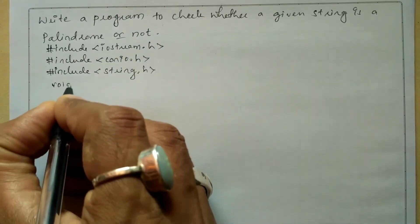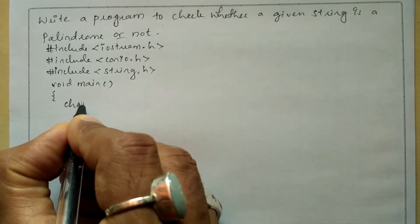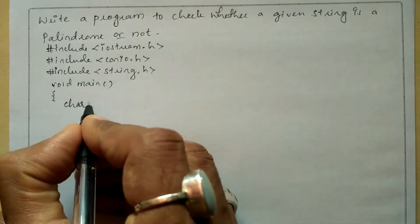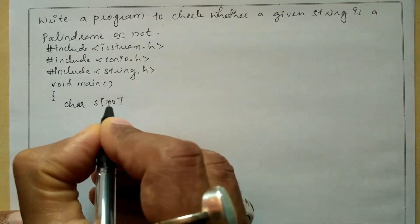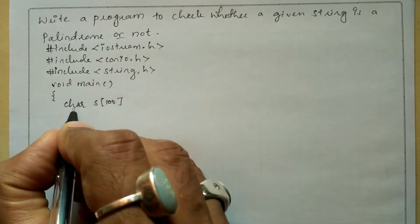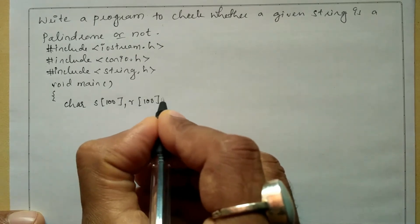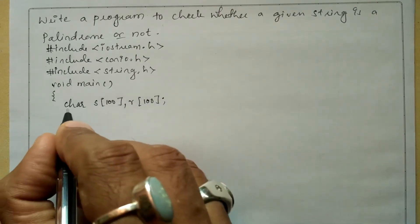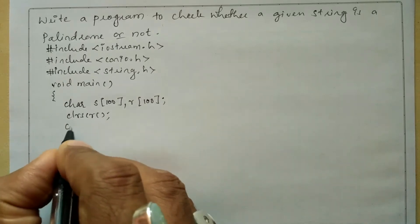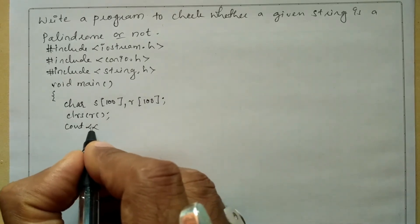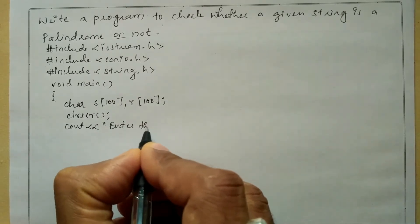Now let us write the main function with a curly open brace. In the declaration section, I'm going to declare two variables of type character array. Here I'll write 's' that represents the string with size 100, and 'r' that represents the reversed string with size 100. Next I'll write the clrscr function to clear the screen. Now we will ask the user to enter the string using a cout statement with the stream insertion operator, writing 'Enter this string'.